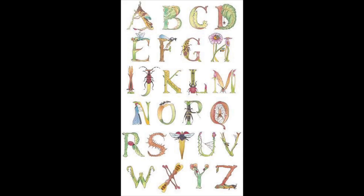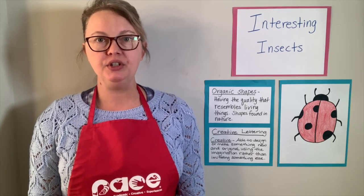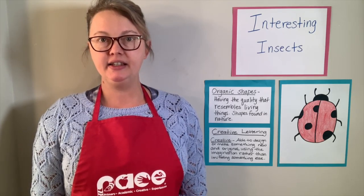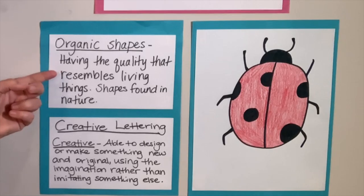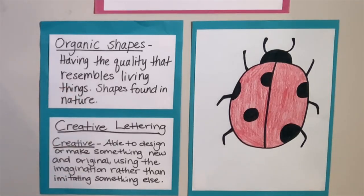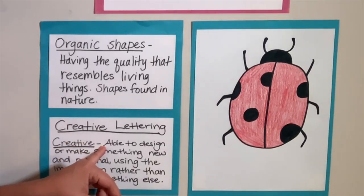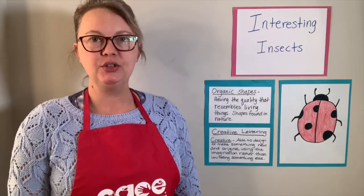All of these insects are different and have different qualities and different shapes. If we think about different shapes when we do our lettering, let's look closer at what an organic shape is. Organic shapes are defined as having the quality that resembles living things — shapes found in nature. So organic shapes are going to work really well with our drawing today and our lettering. Creative is defined as able to design or make something new and original using the imagination rather than imitating something else.